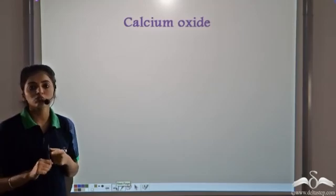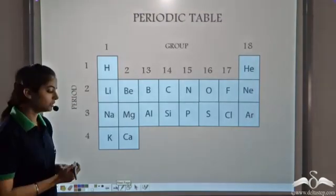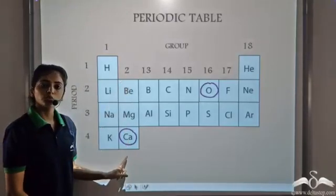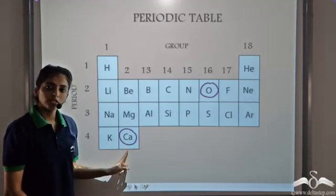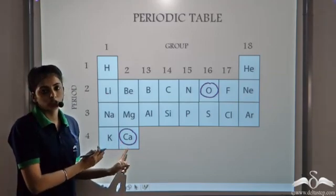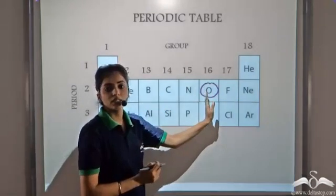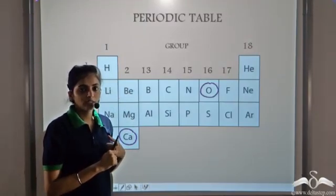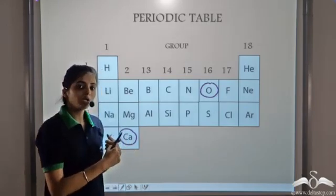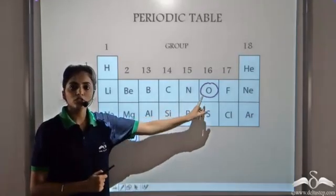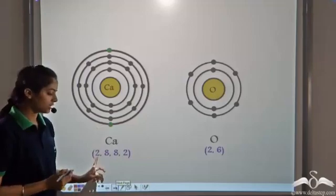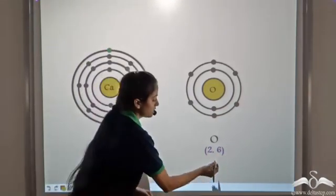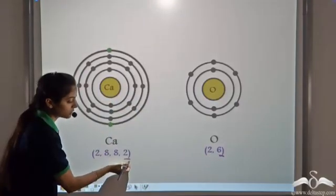Let's take another example: calcium oxide. Calcium belongs to group 2 — it is a metal with very low ionization potential, low electron affinity, and low electronegativity. Oxygen belongs to group 16 — it is a nonmetal with large electronegativity, high electron affinity, and high ionization potential. So the compound formed between calcium and oxygen is ionic. Calcium has the electronic configuration 2, 8, 8, 2 and oxygen has 2, 6. The valence shell of oxygen has 6 electrons and calcium has 2 valence electrons.